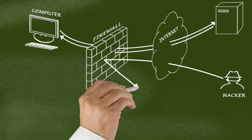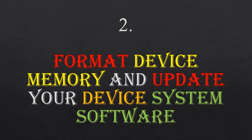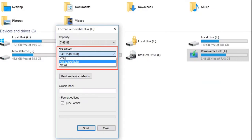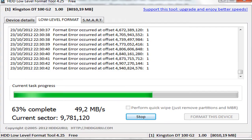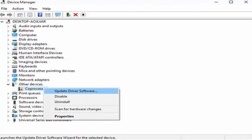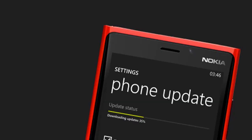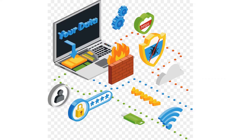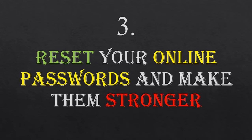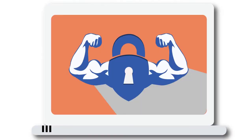Number two: format your device, be it phone or computer. After you are done formatting, update the system so that malware won't get access to your computer again and so you can delete them from your computer.